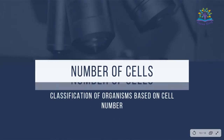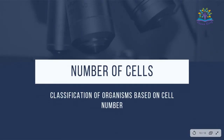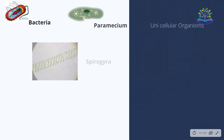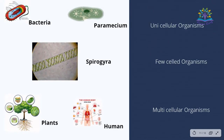Based on the number of cells present in an organism, they are classified as: unicellular organisms, for example bacteria and paramecium; few-celled organisms, for example spirogyra; and multicellular organisms, for example plants and humans.